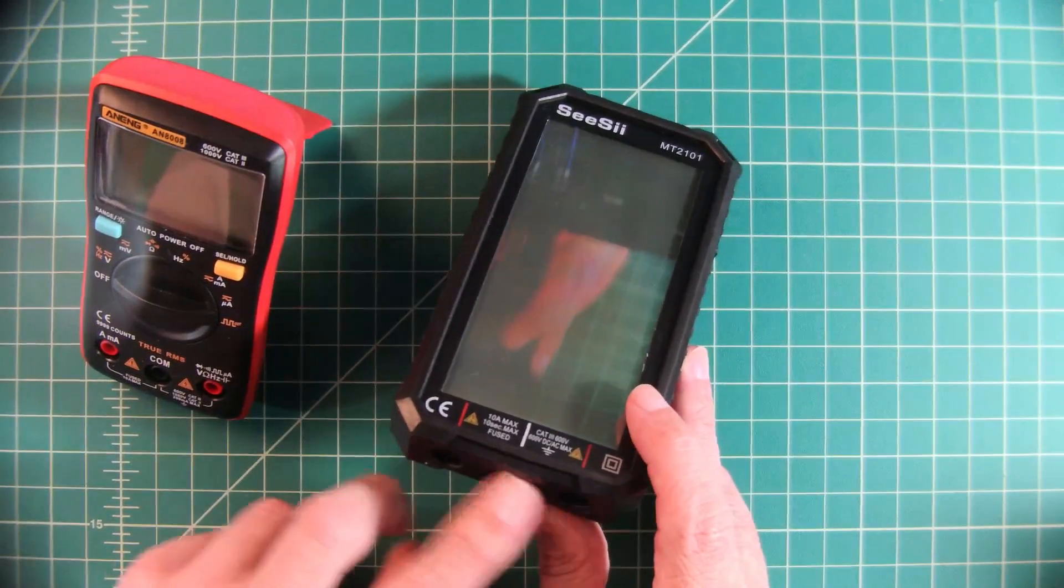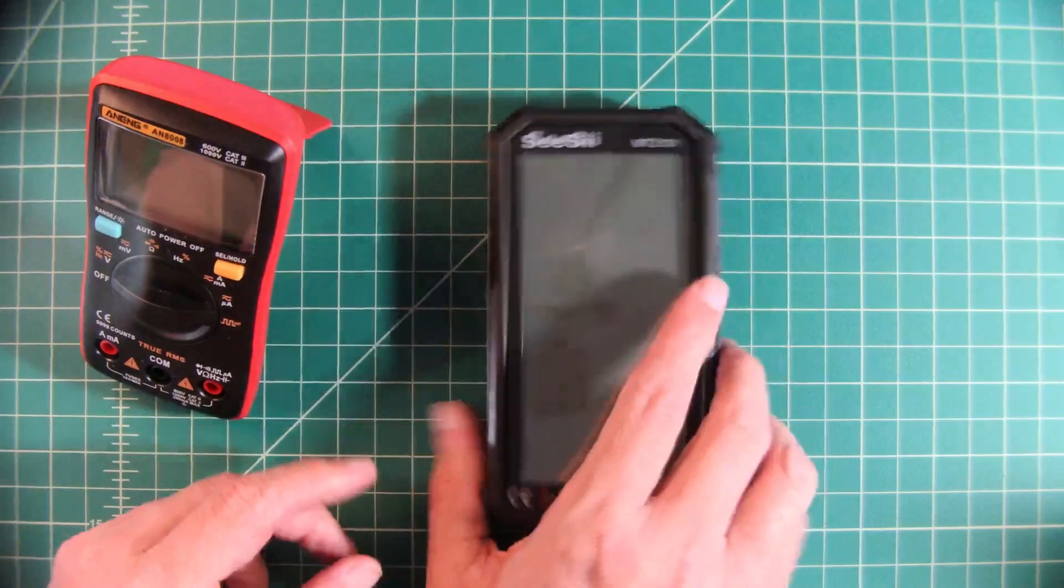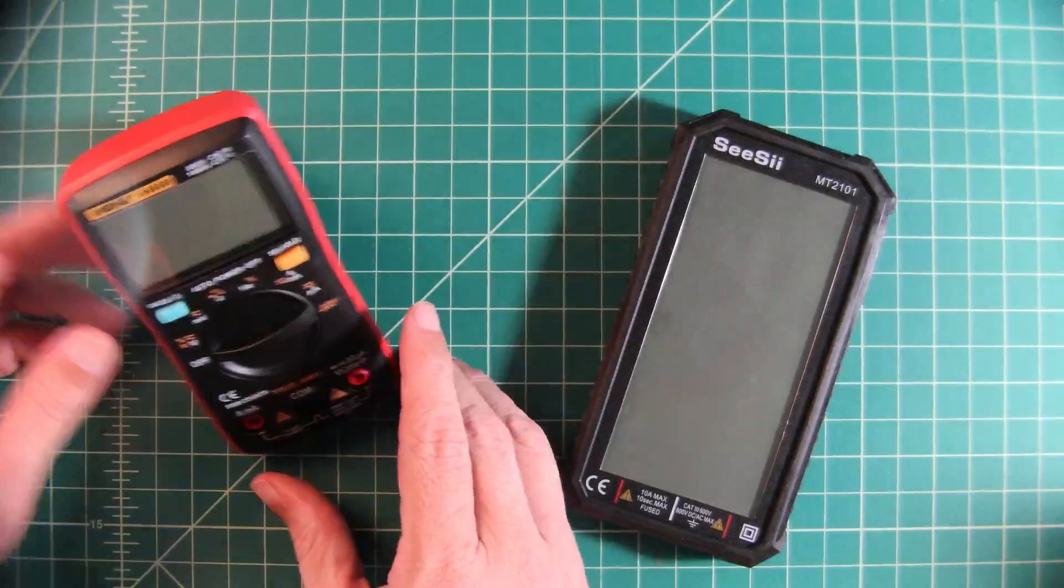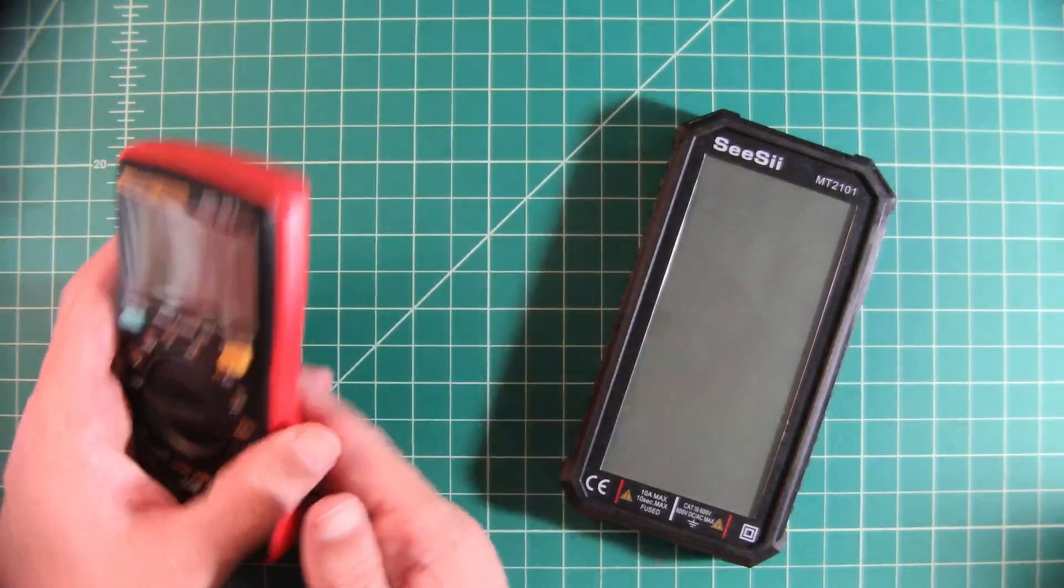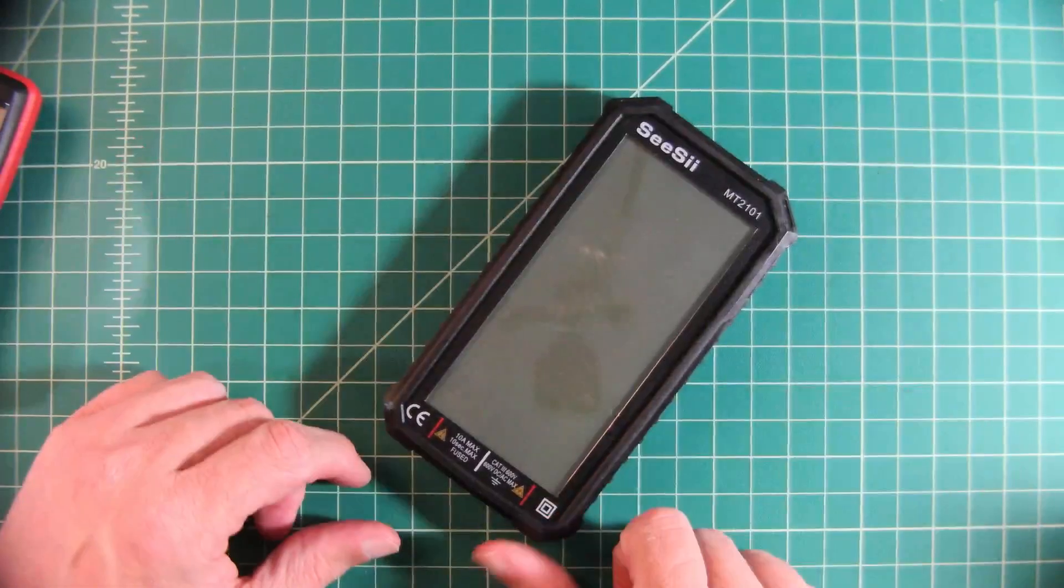So because you plug your cables into the bottom of this there's no bail. Right? So you can't tilt it up and then work with the multimeter in a tilt up fashion like you can with this one for example. It's not a big deal but it is something that I did want to point out.